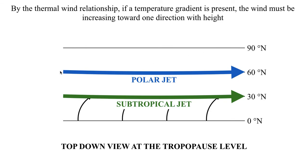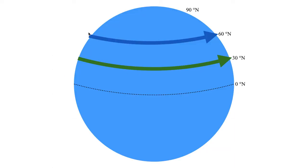So we have the polar jet, which typically hangs out around 60 degrees north, and the subtropical jet, which typically hangs out around 30 degrees north. Between the two, the polar jet is by far the stronger. The other interesting thing that happens with the polar jet is, because it's dependent on the temperature gradient at ground level, the shape of the polar jet is easier to change.